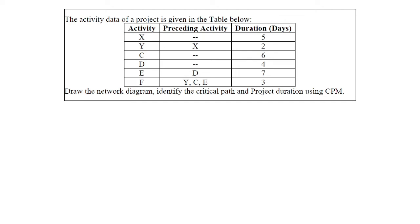Let us see the first numerical. The first numerical question: the activity data of a project is given in the table below, with columns for Activity, Preceding Activities, and Duration in Days. We are asked to draw the network diagram, identify the critical path, and find the total project duration using the critical path method. Activity X has 5 days duration. Activity Y is preceded by X with a duration of 2 days. Activity C has 6 days, Activity D has 4 days, Activity E has 7 days with D as its preceding activity. Finally, Activity F has preceding activities Y, C, and E, with a duration of 3 days.